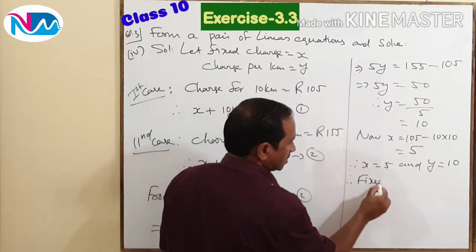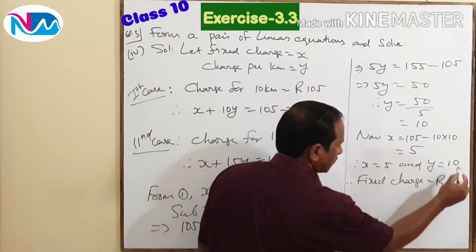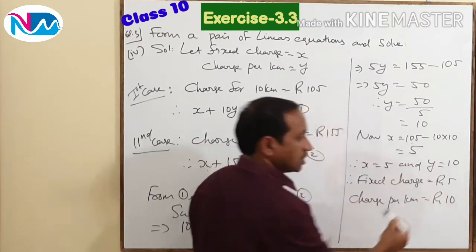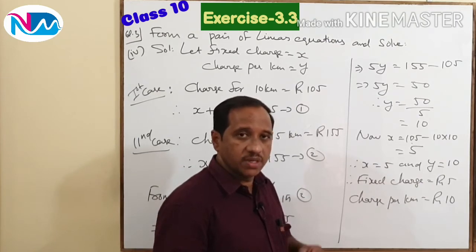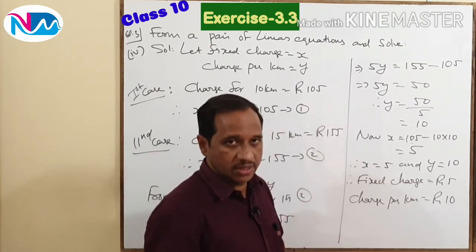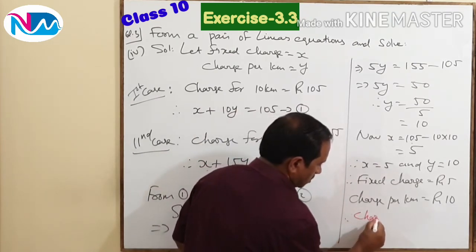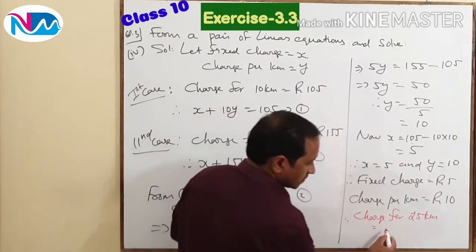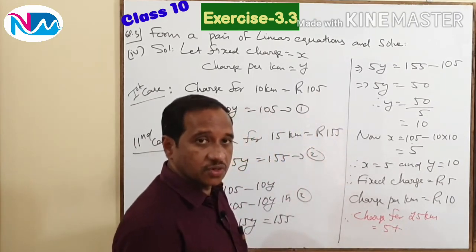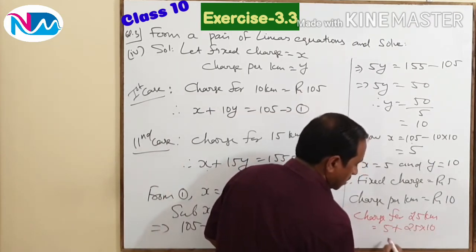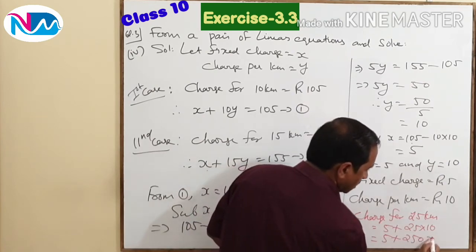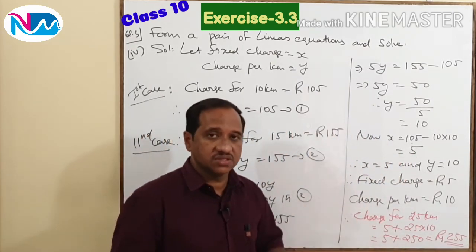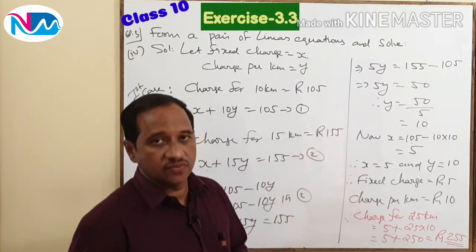Therefore, the fixed charge is ₹5 and the charge per kilometre is ₹10. Now we have to find the total charge to be paid by a passenger who travels 25 kilometres. The charge for 25 km equals the fixed charge 5 plus the charge for 25 km, that is 25 times 10, which equals 5 plus 250, which is ₹255. This is the charge the passenger has to pay for travelling 25 kilometres.